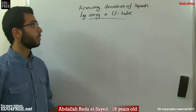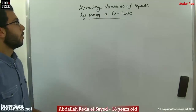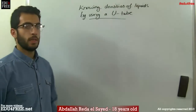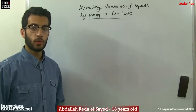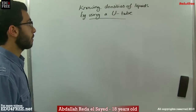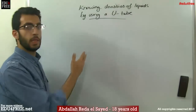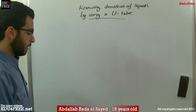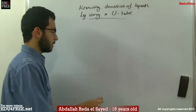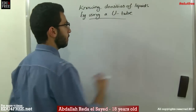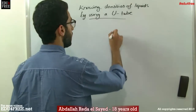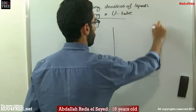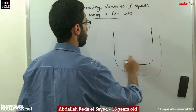As-salamu alaykum. Today we will learn how to calculate the densities of liquids relative to water by using a U-tube. A U-tube is a tube shaped like a U.